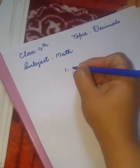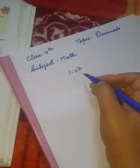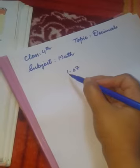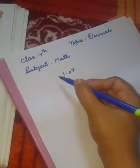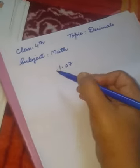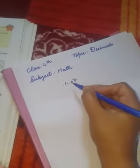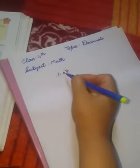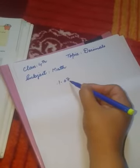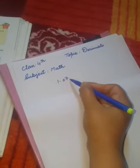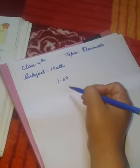For example, if we write 1.07 — the numbers on the left side of the decimal point, we write their place value directly: ones, then tens, hundreds, thousands. But the numbers on the right side of the decimal point — for example, here there is 0, so its place value is tenths, and 7 is seven hundredths.